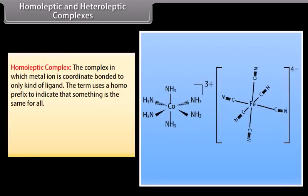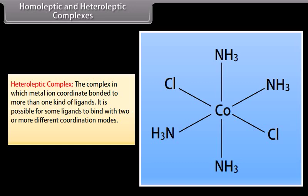Homoleptic complex: a complex in which the metal ion is coordinate-bonded to only one kind of ligand — for example, [Co(NH3)6]3+ and [Fe(CN)6]4−. Heteroleptic complex: a complex in which the metal ion is coordinate-bonded to more than one kind of ligand; it is possible for some ligands to bind with two or more different coordination modes — for example, [CoCl2(NH3)4]+.